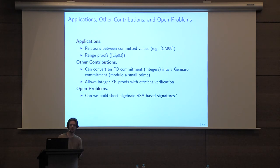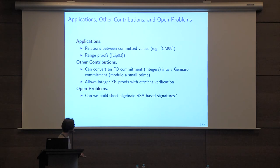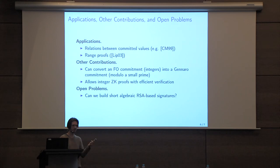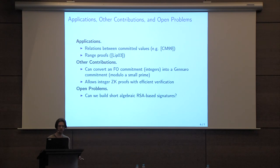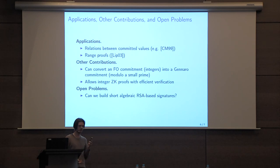As an interesting open problem: we know there are many results on building short signatures whose security reduces to the RSA assumption, but those signatures are usually non-algebraic and not efficient for building proofs on top of. We have very good strong-RSA-based signatures which are algebraic and short. Could it be possible to adapt our technique to build a strong-RSA-looking signature whose security could in fact be reduced to the standard RSA assumption? That concludes my talk — thank you for your attention.